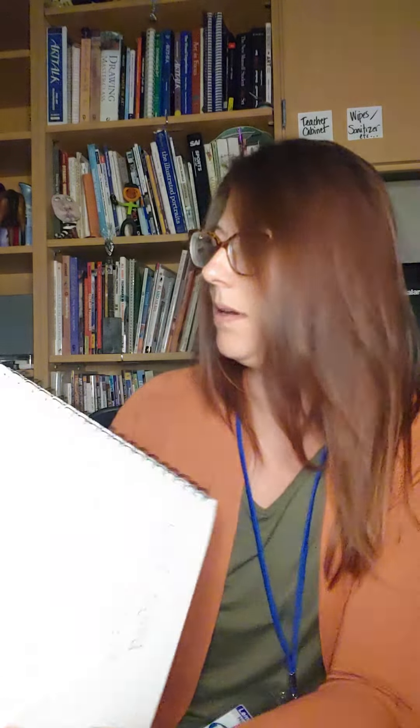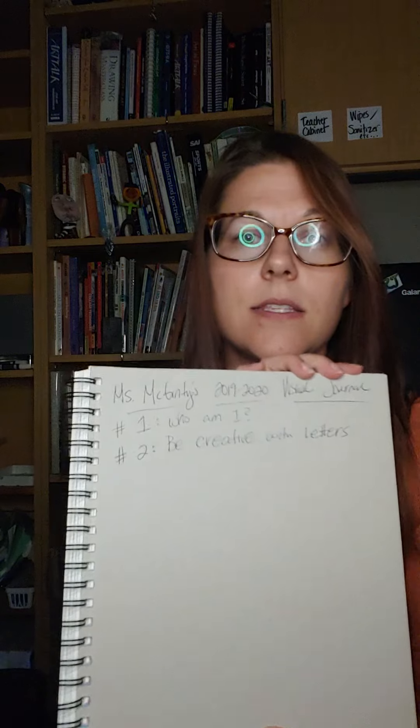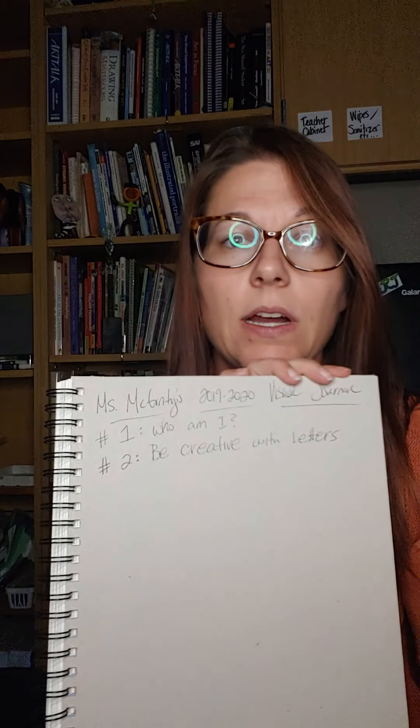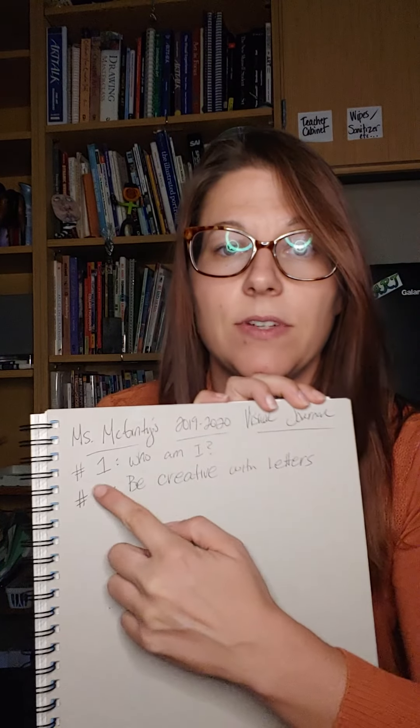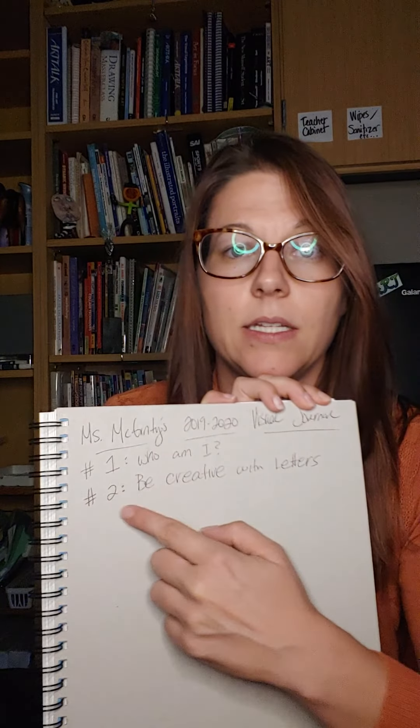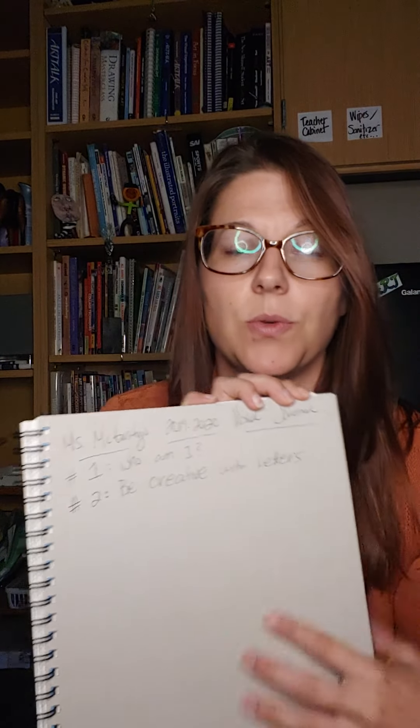So you're going to take that prompt and keep a running tab — see, like this — somewhere in your visual journal. We have number one, number two, and so on.